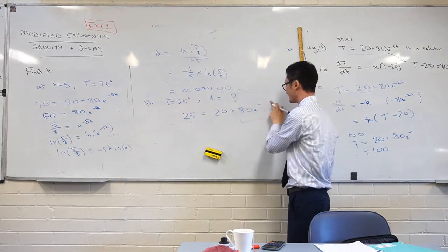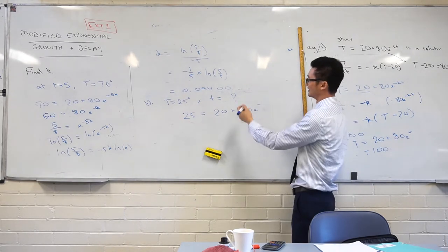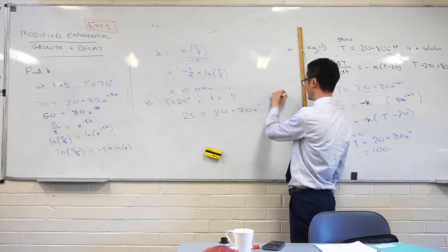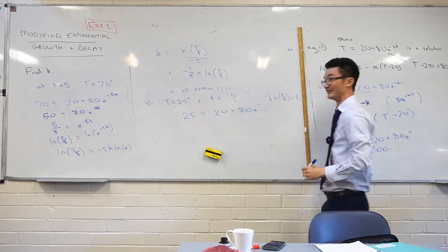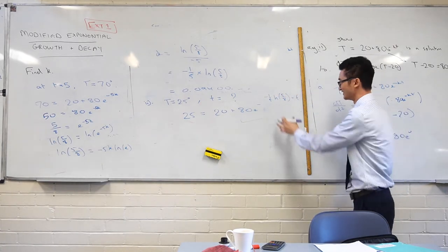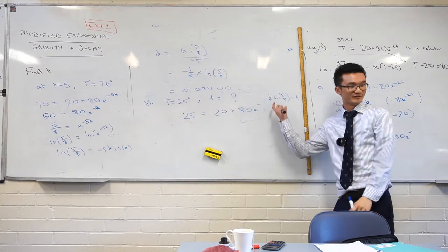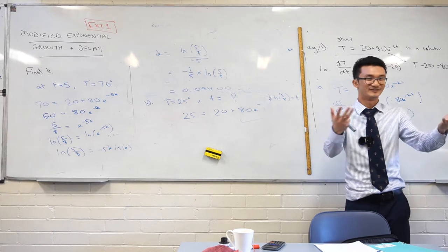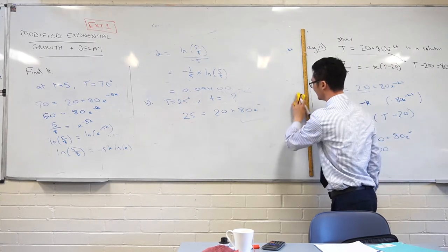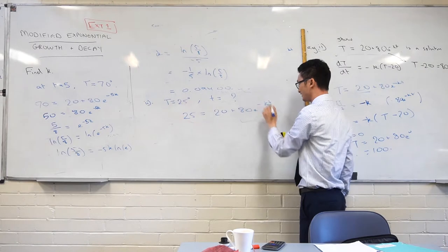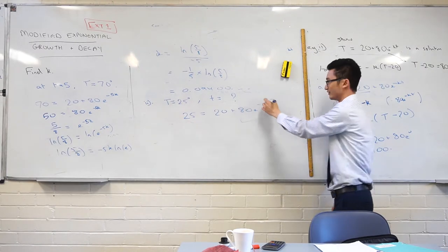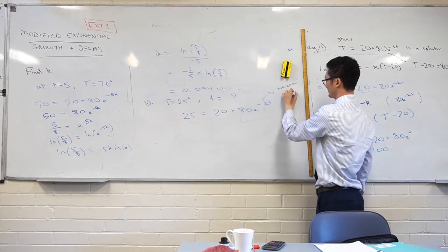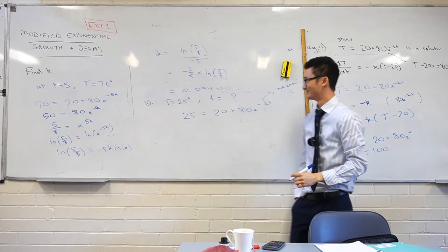Well, because what I could do is I could write, you know, negative 1 on 5 ln 5/8 times t, if I really wanted to be showing that I know what k is. But think about writing that for every line that you're trying to solve for what t is actually going to be. It's a bit tedious. So, let's get rid of that. Instead, we can just write negative kt, but just forget that you actually know what that is. Okay. So, let's go and solve, right? What do I do? Let's get rid of these constants.